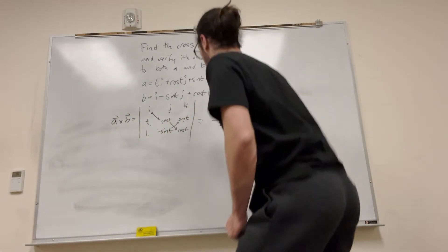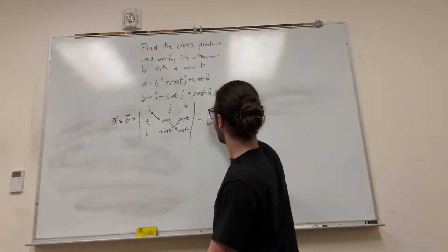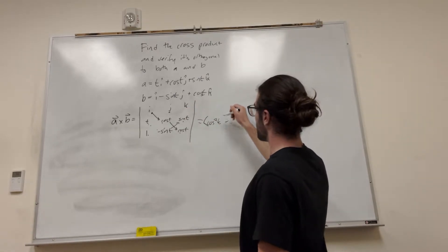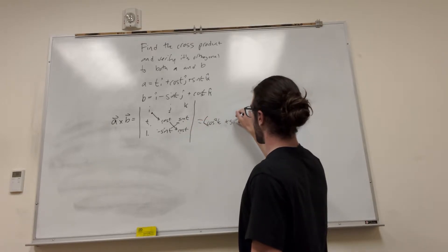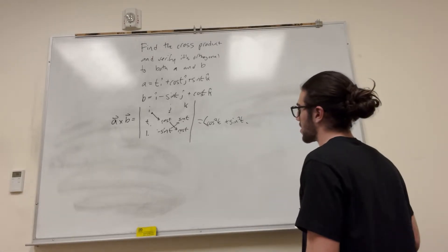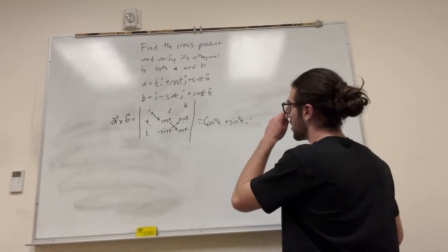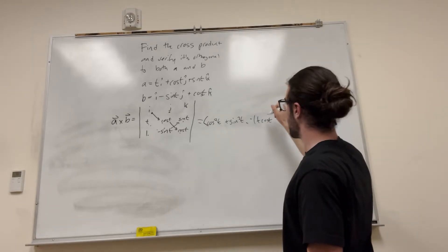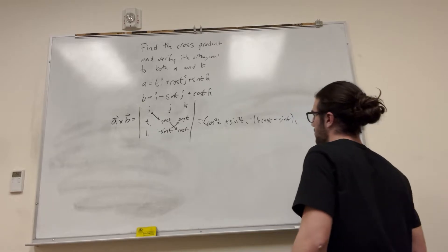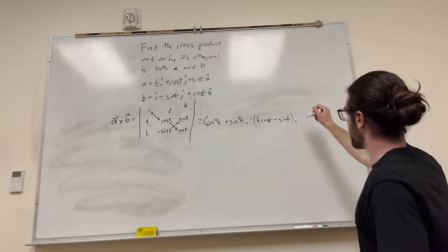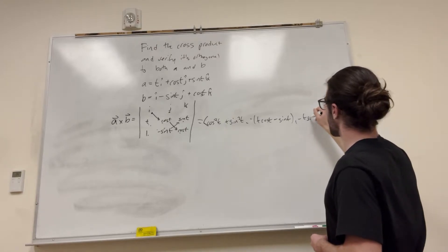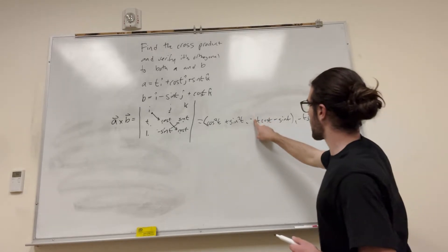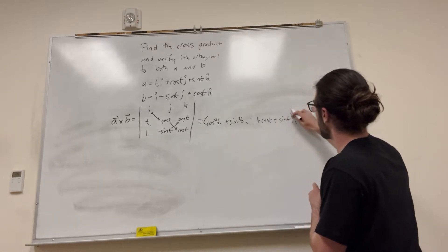So what this is going to look like: we're going to have, in parentheses, cosine squared of T minus negative sine of T times sine of T, which is sine squared of T. That's our I value. Our J value is negative always, so J is going to be minus all of this: T cosine of T minus sine of T. And then our K value is going to be negative T sine of T minus cosine of T. And this is what we got. We can make this a little bit easier to read by making this a plus sine instead. And that's our cross product.